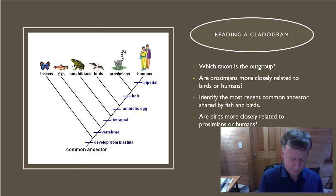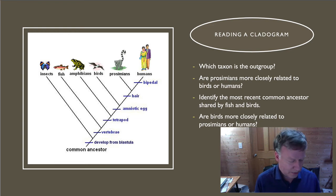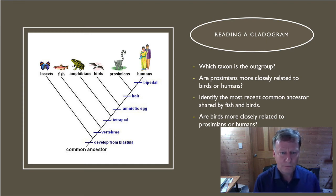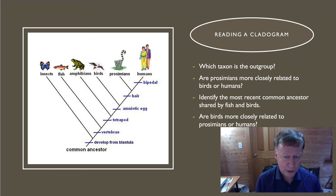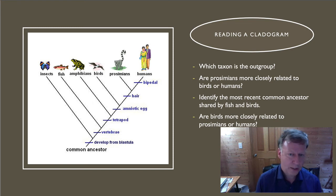Finally, reading a cladogram. Sometimes you have to draw them, but it's equally likely you'll need to look at a cladogram and deduce information from it. Here is a cladogram with some questions. Before I answer them, I'm going to read off the questions and I want you to pause the video and try answering each on your own. First, which taxon is the out-group? Second, are prosimians more closely related to birds or to humans? Third, identify the most recent common ancestor shared by birds and fish. And finally, are birds more closely related to prosimians or to humans? Pause the video, try answering those four questions, and then come back.